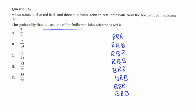The quicker way is to use complementary events, because the question is asking for the probability that at least one of the balls John selected is red. Any of these outcomes will satisfy that statement, so the only one we have to concern ourselves with is the blue blue blue event, and then find its complement.